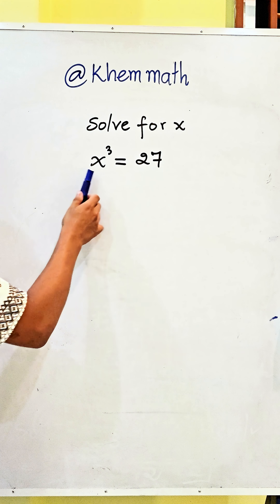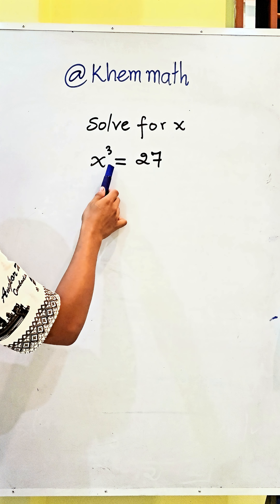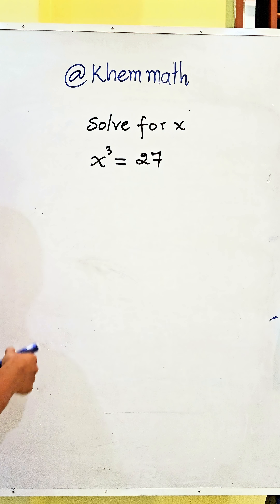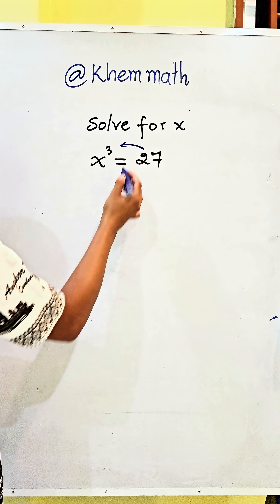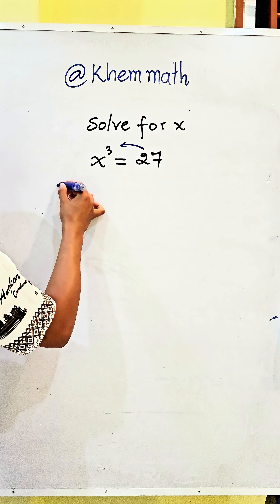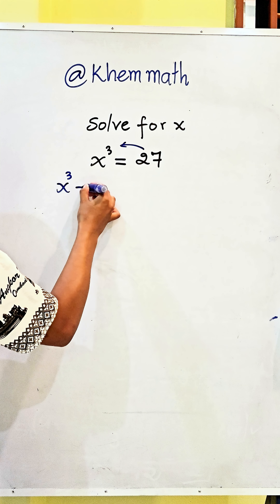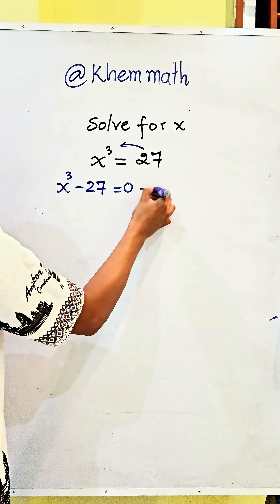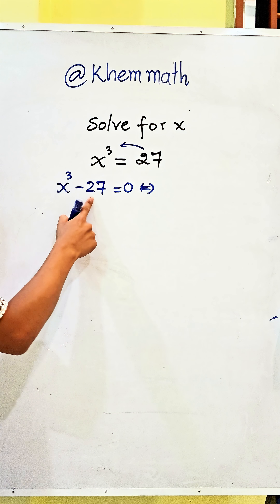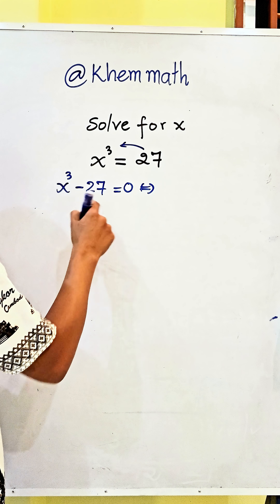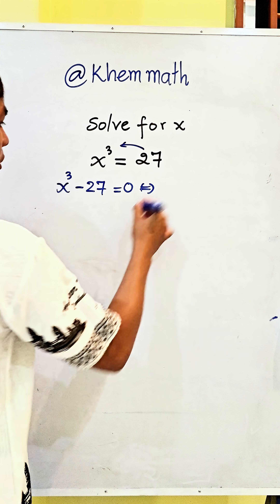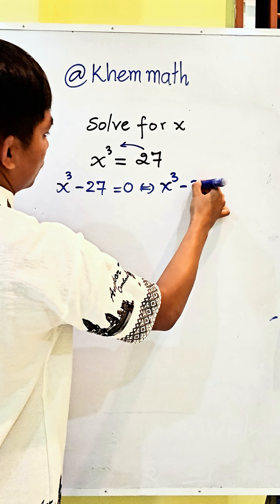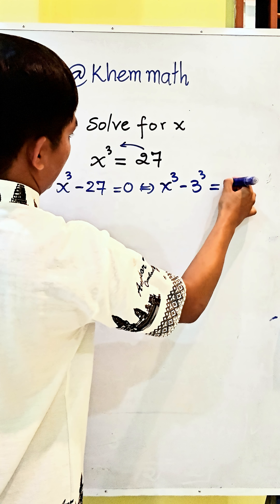For x, here x power 3 equals 27. The first step, we change 27 to the left hand side. That is x power 3 minus 27 equals 0. And also here x power 3, I can write it as 3 power 3. So we get x power 3 minus 3 power 3 equals 0.